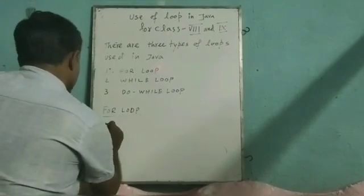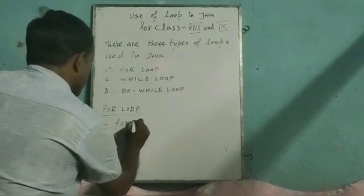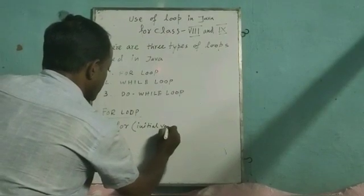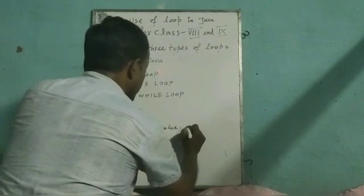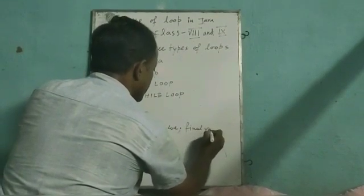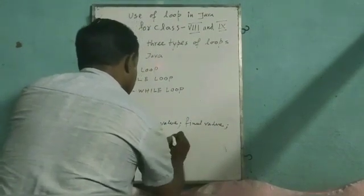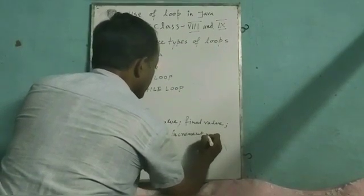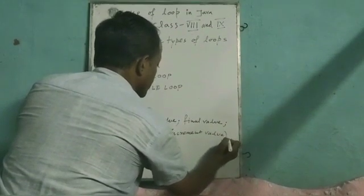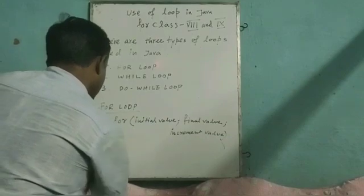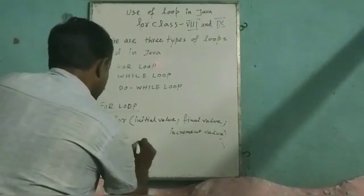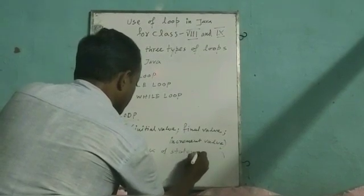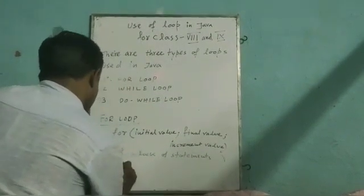First we will see the syntax of for loop. For, then we will give open bracket, then we will write initial value, semicolon, final value, semicolon, increment value, close bracket. After this, in the next line we put one opening brace, then we write the part of the program which we want to repeat, a block of statements.